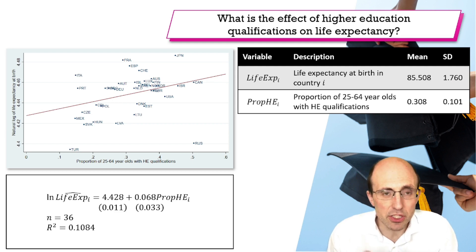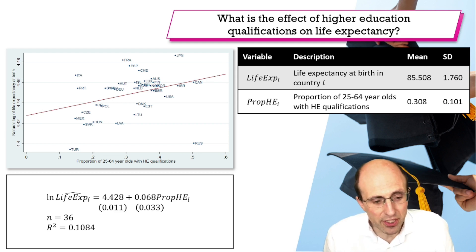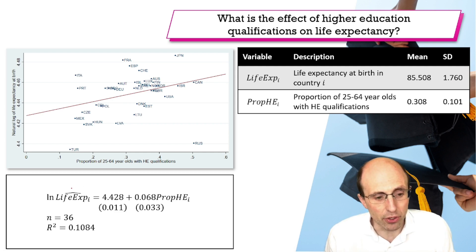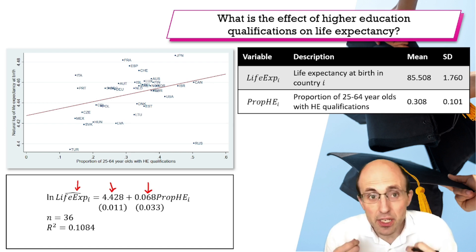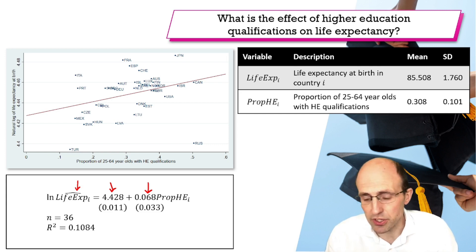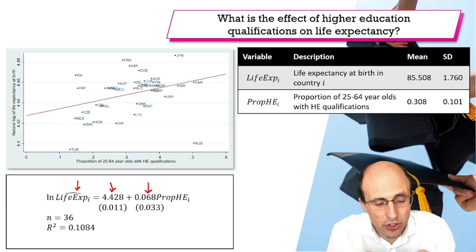Our estimated relationship — you can see it's an estimated relationship because there's a hat on top of the natural log of life expectancy — gives us an estimated intercept of 4.428 and an estimated slope parameter of 0.068. We want to try and interpret this estimated regression.